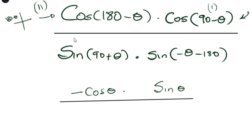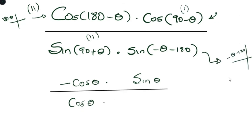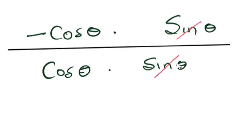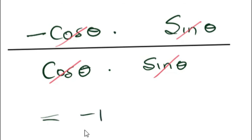Then we have sine(90 plus theta). Since 90 plus theta is in the second quadrant and sine is positive there, and whenever you see 90 it changes to cosine, this becomes cosine theta. Finally, sine(negative theta minus 180) is also in the second quadrant of the negative angle, and since sine is positive in the second quadrant, this is written as sine theta. From here, we can cross-cancel: the cosine theta terms cancel and the sine theta terms cancel, leaving just negative one as the final answer. This is an application of co-ratios used together with reduction.